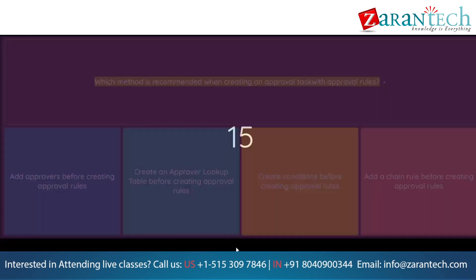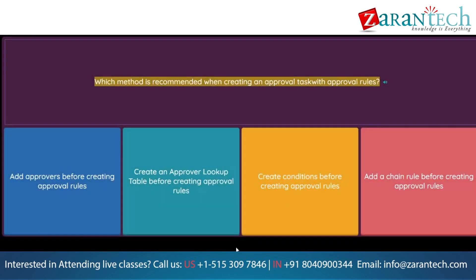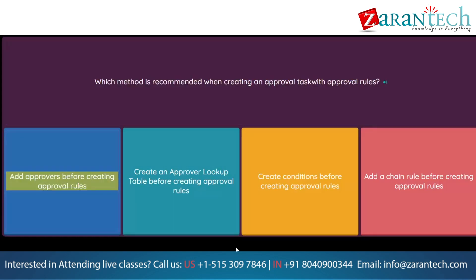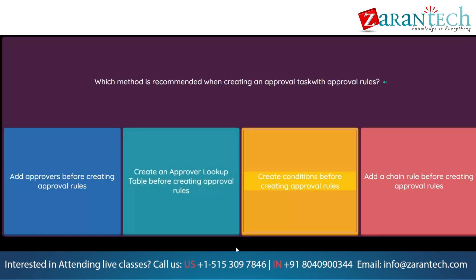Question: Which method is recommended when creating an approval task with approval rules? Option 1: Add approvers before creating approval rules. Option 2: Create an approver lookup table before creating approval rules. Option 3: Create conditions before creating approval rules. Option 4: Add a chain rule before creating approval rules.